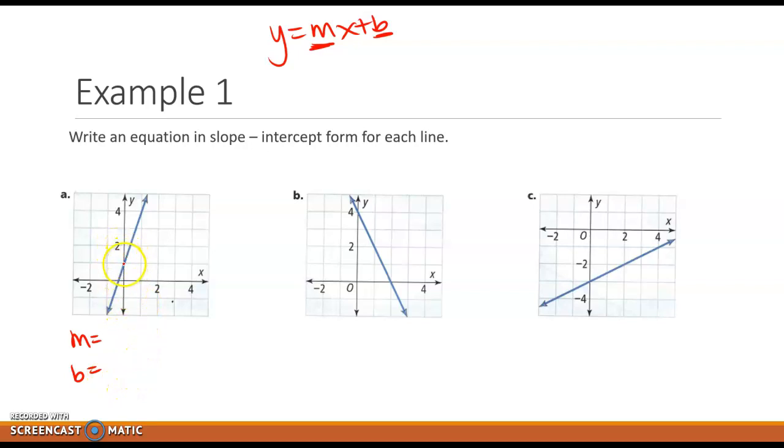The easiest thing to find is our b, that y-intercept. So in case you forgot, this is our y-intercept, and m is our slope.